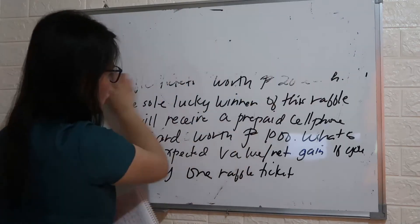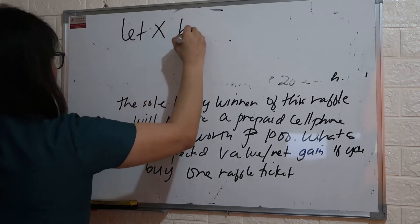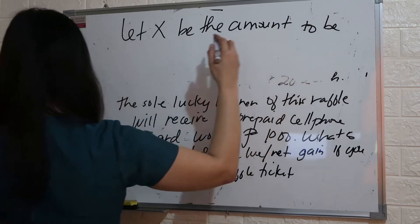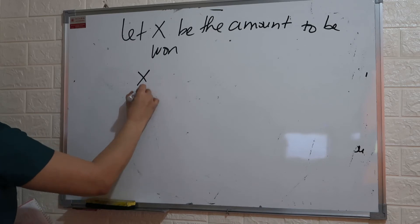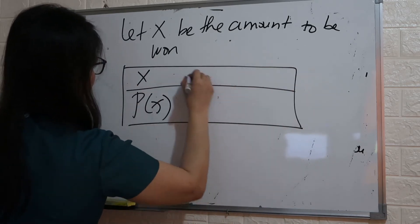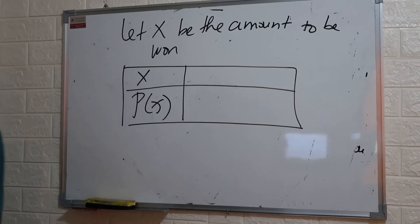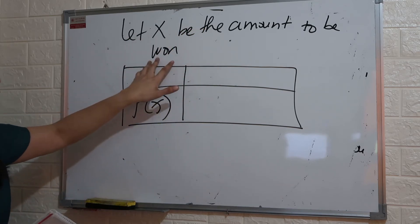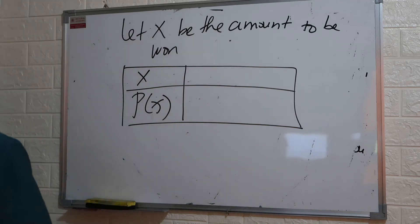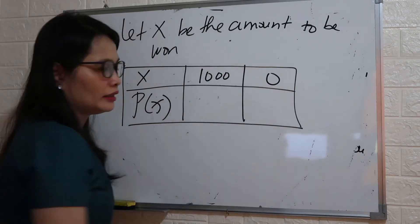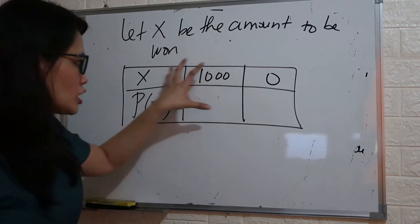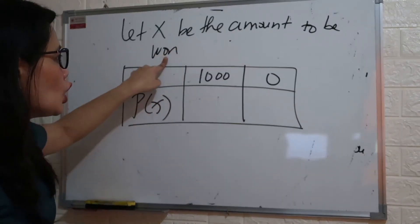How do we answer this? First, let x be the amount to be won. We have a table. Based on the problem, how much will they receive if they win the raffle ticket? They will receive 1,000 or nothing — meaning either winning or losing. For the person who wins the raffle ticket, they will receive 1,000; for those who don't win, they receive nothing.